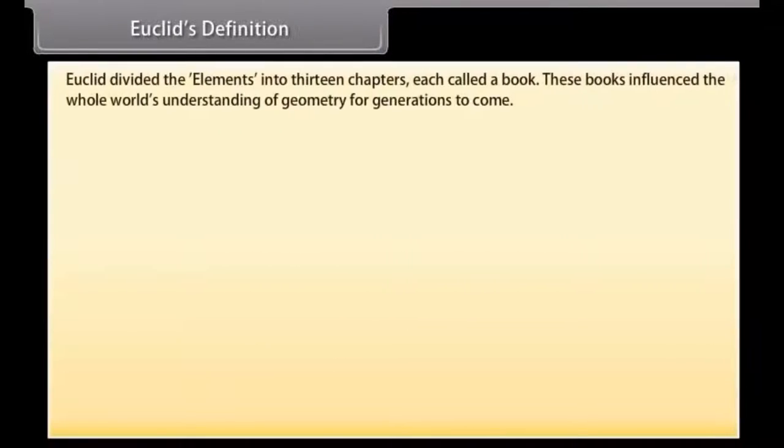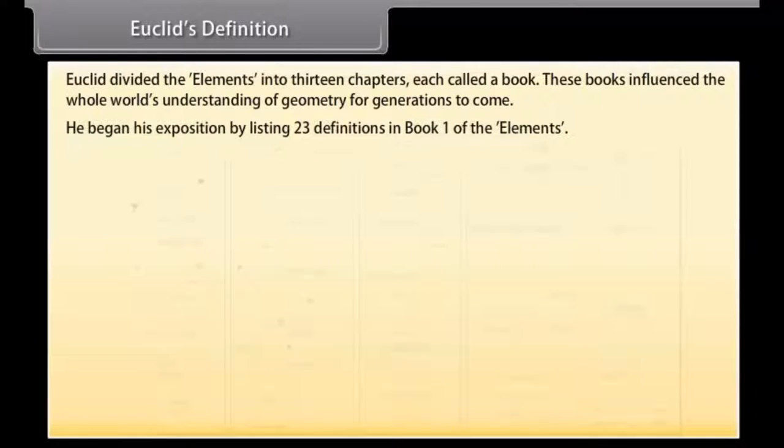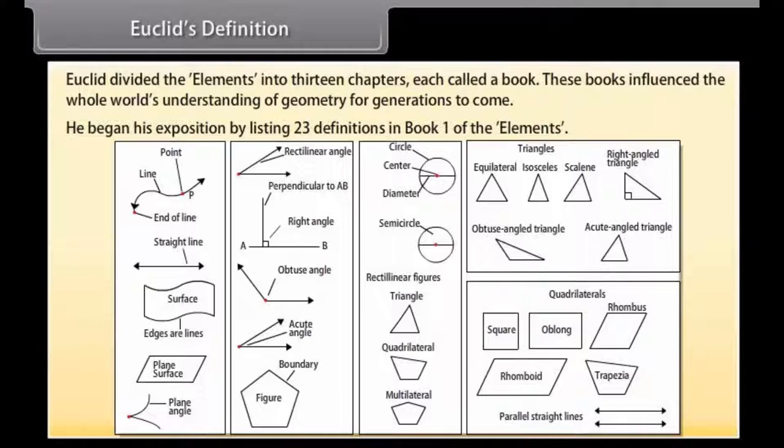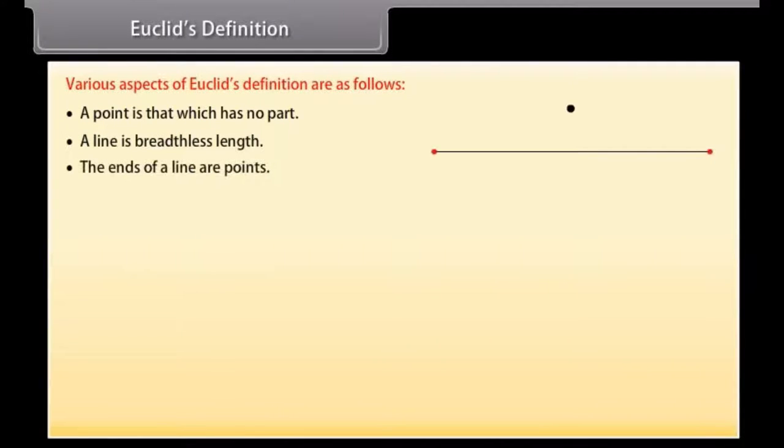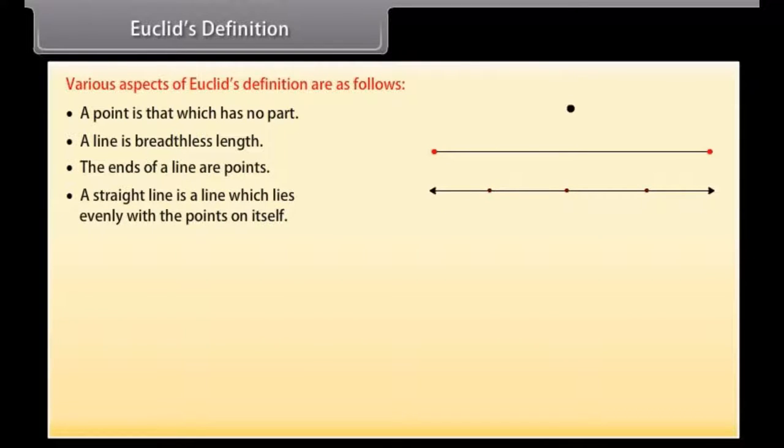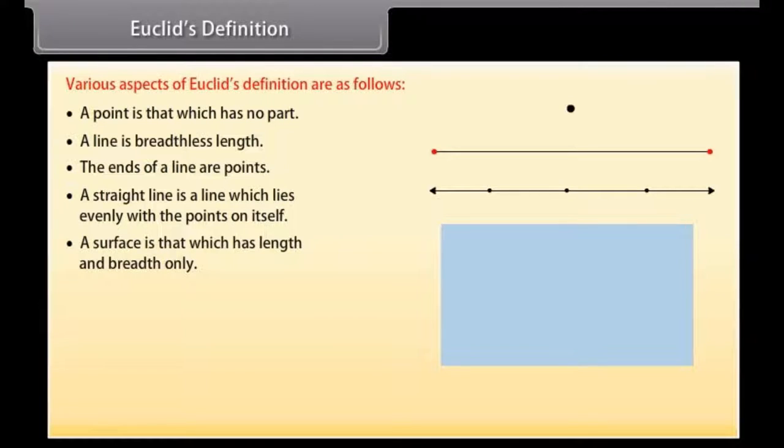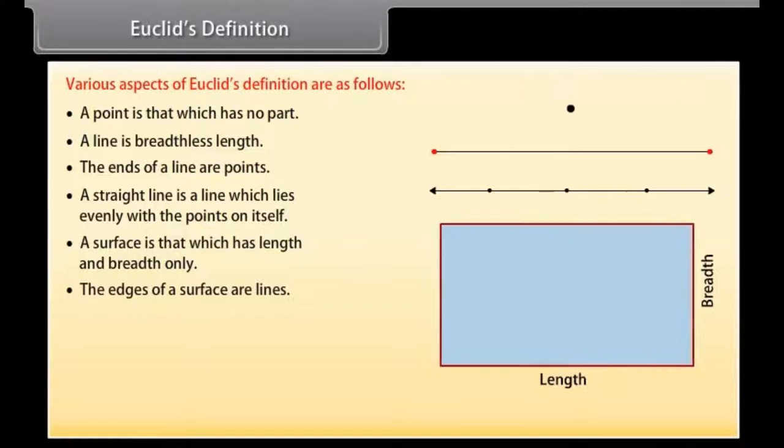Euclid's definition. Euclid divided the elements into 13 chapters, each called a book. These books has influenced the whole world's understanding of geometry for generations to come. He began his exposition by listing 23 definitions in book 1 of the elements. A few of them are: A point is that which has no part. A line is breadthless length. The ends of a line are points. A straight line is a line which lies evenly with the points on itself.